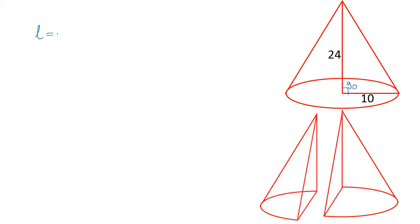So slant height will be under root R square plus H square which is Pythagoras theorem. Radius is given as 10, height is 24. The square of 10 is 100. The square of 24 is 576. And the sum will be 676.